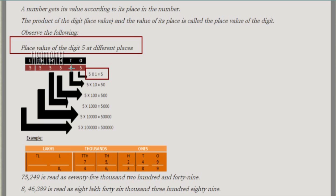For the 5 in tens place, the face value is 5 and it is in tens place, so we multiply: 5 × 10 = 50. The place value of this 5 is 50. For the 5 in hundreds place, we multiply 5 × 100 = 500, so the place value is 500.